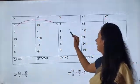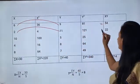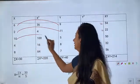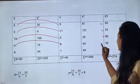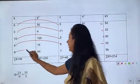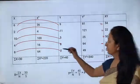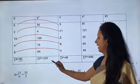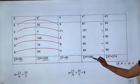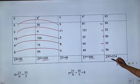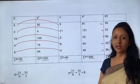Now the calculation of xy, x multiplied by y: 6×9=54, 2×11=22, 10×5=50, 4×8=32, 8×7=56. Now we will sum all the columns: Σx=30, Σx²=220, Σy=40, Σy²=350, Σxy=214.